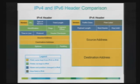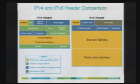IPv6 does not support fragmentation of packets by intermediate routers. If fragmentation is required, it has to be done by the originating source node, using one of the extension headers that supports fragmentation. The identification, flags, and fragment offset fields in IPv4 are used primarily for fragmentation and reassembly — so obviously those fields are removed from IPv6.